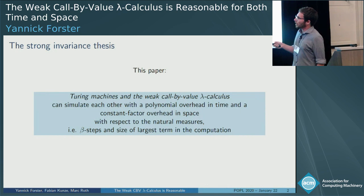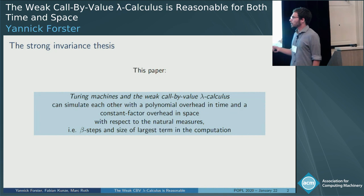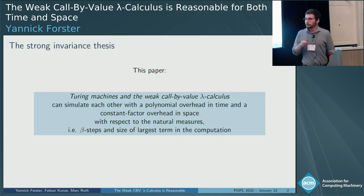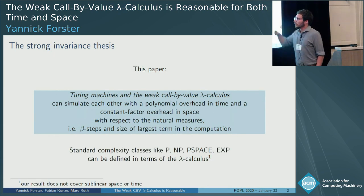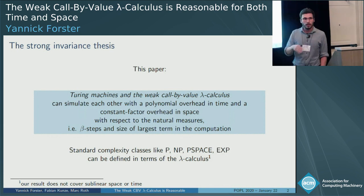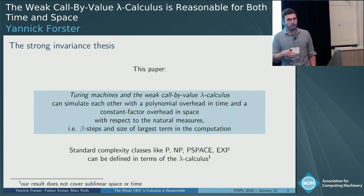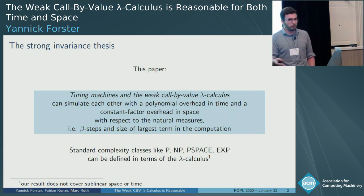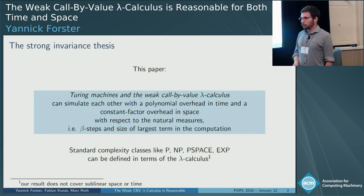For time, we take the number of beta steps the computation needs. For space, we take the size of the largest term occurring in a computation—essentially the same as the largest configuration on a Turing machine. This implies you can define standard complexity classes like P, NP, and PSPACE in terms of the lambda calculus, and carry out computations in a proof assistant using lambda terms instead of Turing machines.